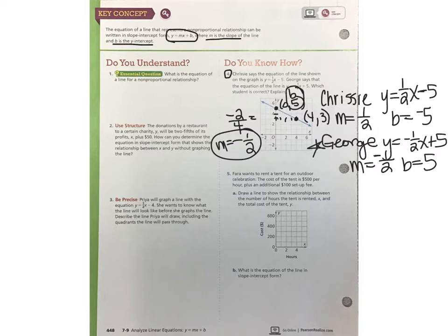So who had the slope at negative 1 half and who had the y-intercept be at 5? And that would be George. So George had it right that the slope was a negative number moving downhill and that the y-intercept was a positive 5, not a negative 5.